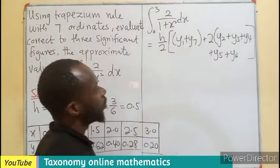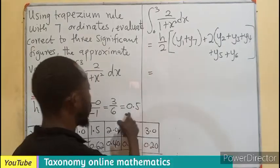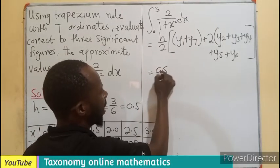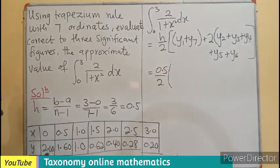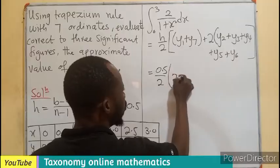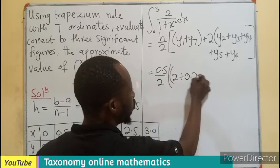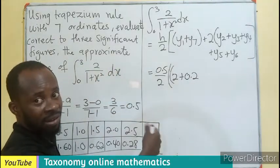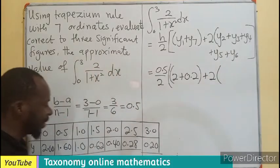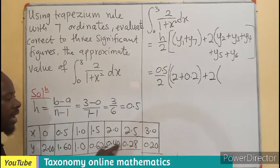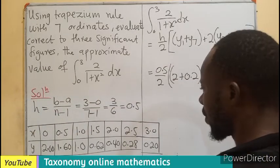That will be y2, y3, y4, y5, and y6. Now we do our substitution, which is going to be h, we know as 0.5, divided by 2, into bracket, your first value which is 2 plus the last value which is 0.2.